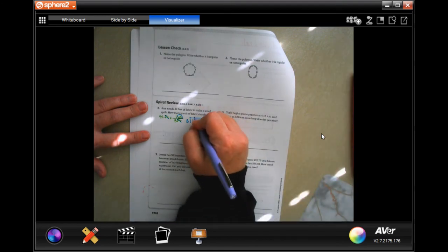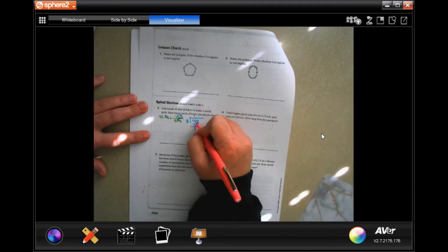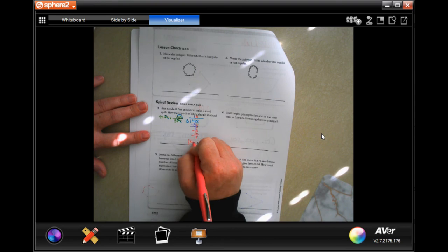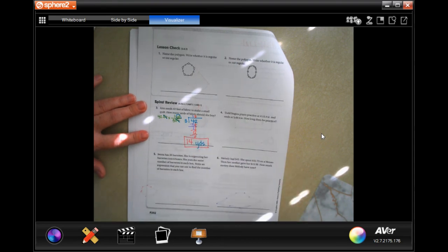Three is going to go into four one time. One times three is three, subtracting get one. One is smaller than three, so I can bring down my two. Three goes into twelve four times. Four times three is twelve, subtract it, zero. So 14 yards. Make sure that you pause and write down your work, guys.